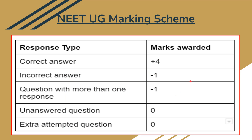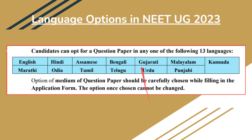Coming to the marking scheme: for every correct answer, candidates will be awarded 4 marks. For every incorrect answer, 1 mark will be deducted. If any candidate marks more than one response in any question, 1 mark will be deducted. Zero marks will be awarded for unanswered questions and for extra attempted questions.